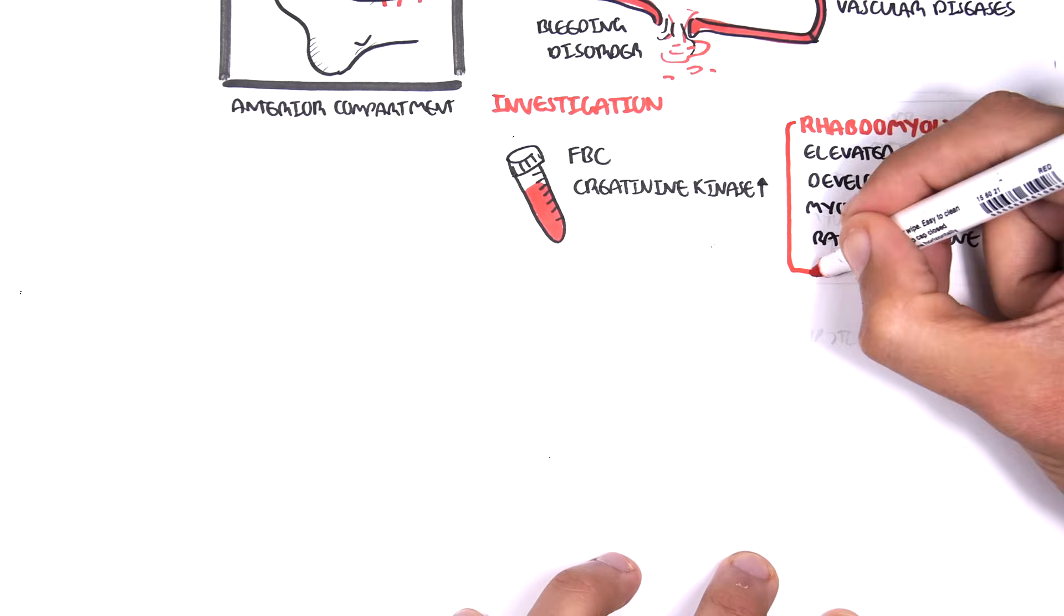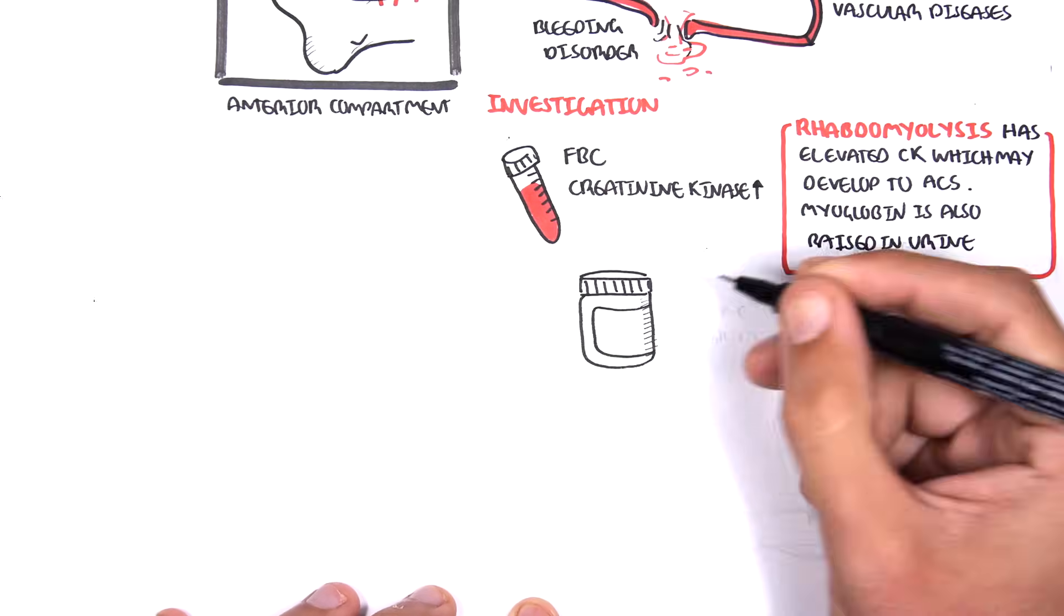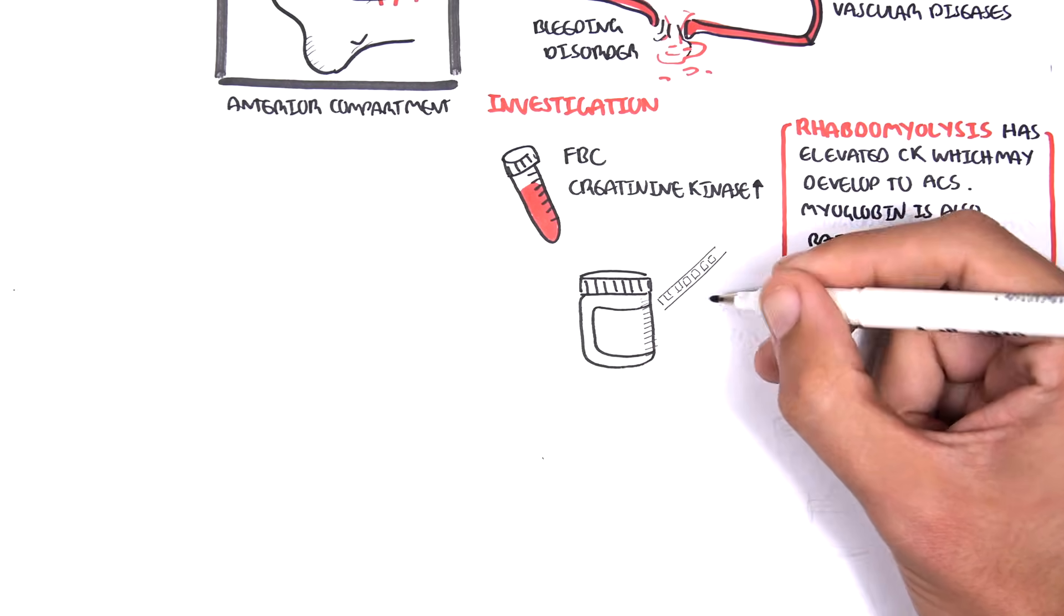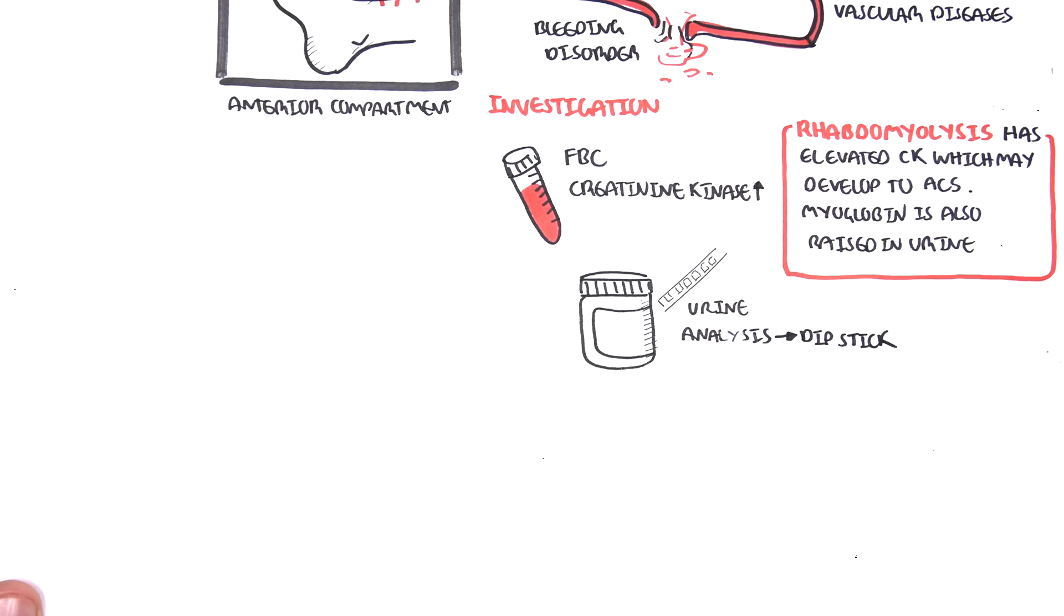Rhabdomyolysis also has elevated creatinine kinase. Rhabdomyolysis can lead to acute compartment syndrome because it is essentially muscle injury. In rhabdomyolysis, myoglobin is also increased in urine. Another investigation for acute compartment syndrome suspicion is urine analysis using dipstick, which will show red blood cells, which correlates to the myoglobin in this case.